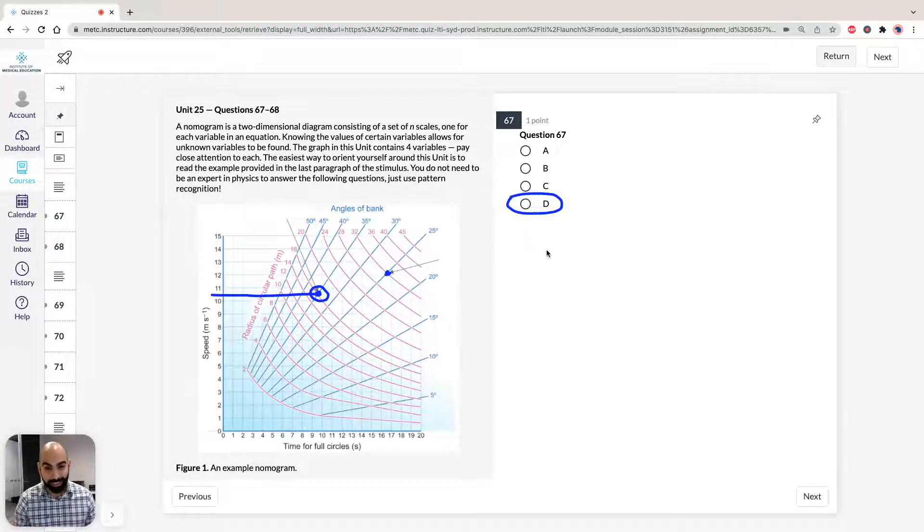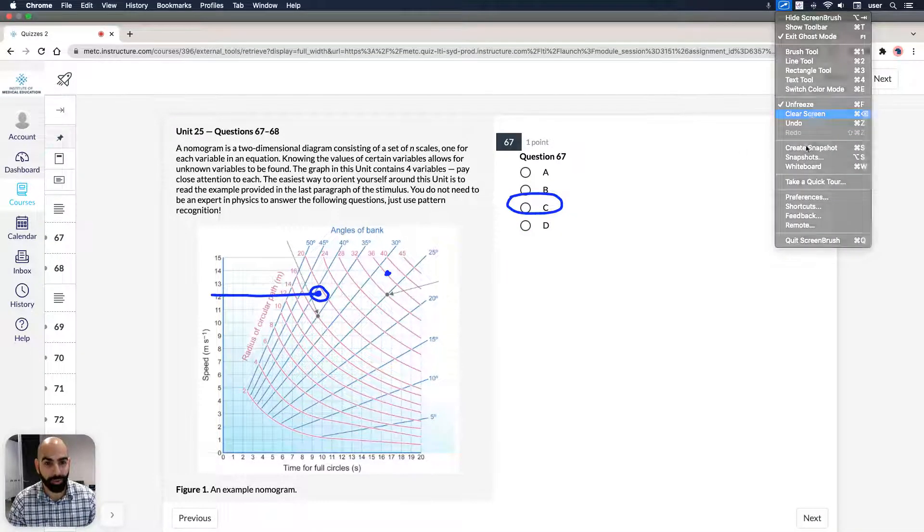Again, you didn't have to know anything about mathematics. It was just having a keen eye and just following. It's kind of like a treasure hunt, pretty much. You're given all the clues and you have to find the point on the map. So that's how we answer 67. Now the final question, 68.